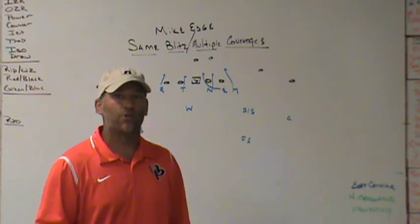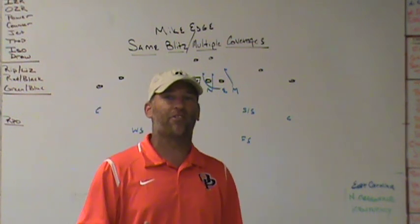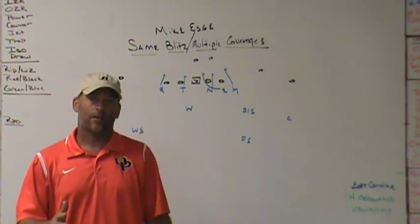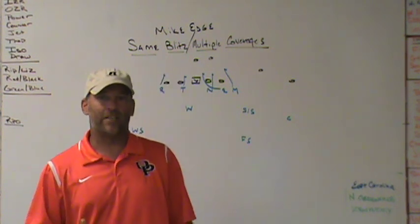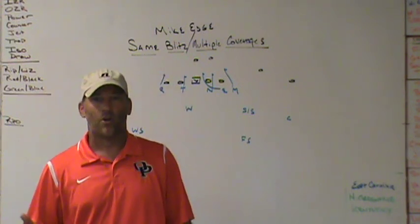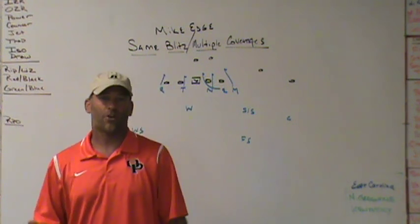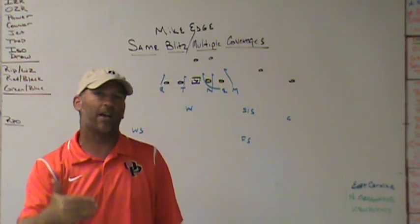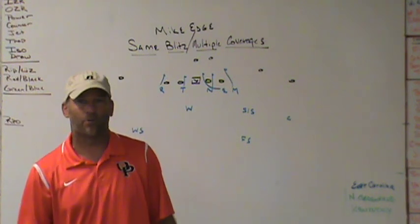As a defense, one of the ways you can help yourself look multiple is to keep a blitz the same — same path and track — which means the guys involved in the blitz can get really good at executing it. Then behind it, it takes a little more work, but you can play three variations of coverage, which changes what the offense needs to do against that blitz. For example, if you run a three-under three-deep blitz and the opponent sees that on film, they'll have certain runs or passes they like against that coverage.